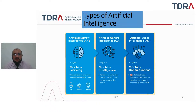There are three types of artificial intelligence. The first, which is current and implemented, is called Artificial Narrow Intelligence. In this type, the machine learns in a specific area and is applied in a specific area — for example, Siri, Alexa, Cortana, and self-driving cars.